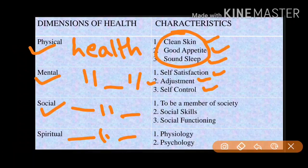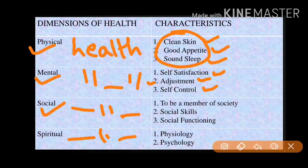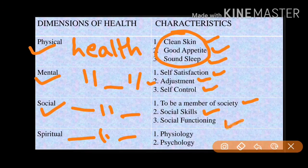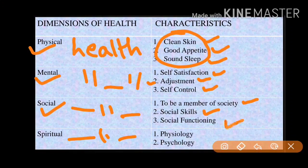Self-control means having control over your anger, fear, jealousy, and worries. That concludes mental health. Moving to social health — the word 'social' means living with all communities, castes, and religions in a friendly way. You should accept other caste, community, and race groups, mingle with them, be a member of society, and possess social skills and social functioning.